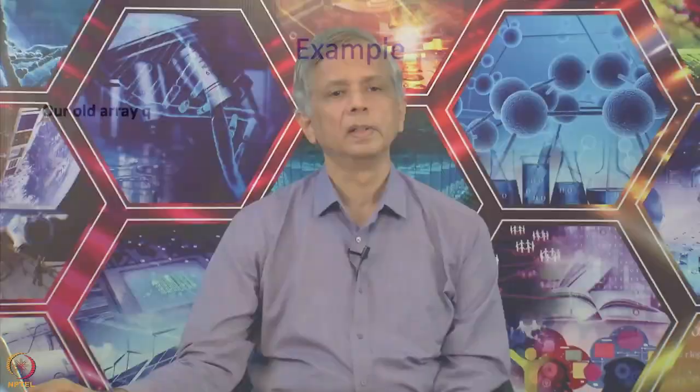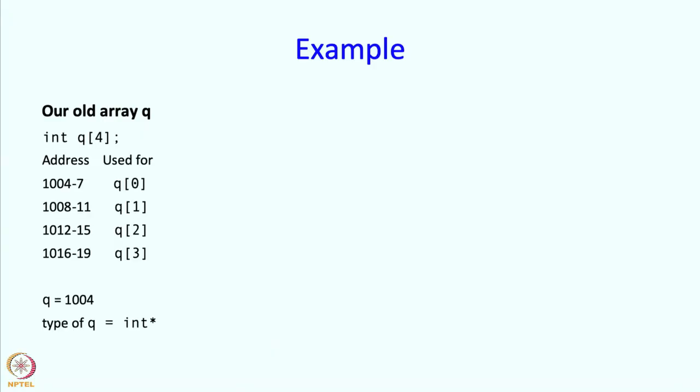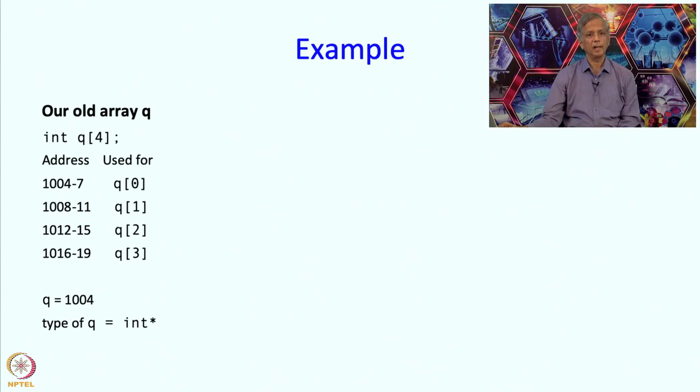So here is an example. This is our old array q, defined by writing int q[4]. We said earlier that these are the addresses used for q0, q1, q2, q3. And the name q has value 1004 and its type is int star.